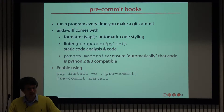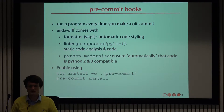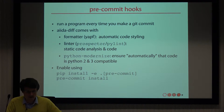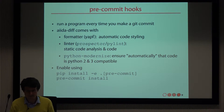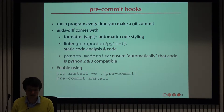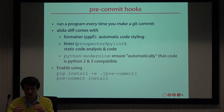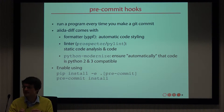One word about pre-commit hooks. Pre-commit hooks is a feature of Git that allows you to run a program every time you make a Git commit. AIDA diff comes with a number of pre-commit hooks. One is a formatter — it simply applies a certain style of formatting to your code, so you don't have to worry about things like whether to split a line or keep it on one line. This takes care of it for you.